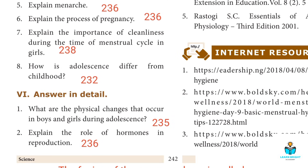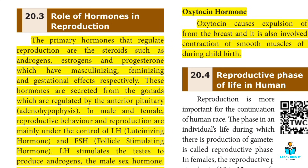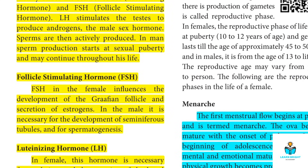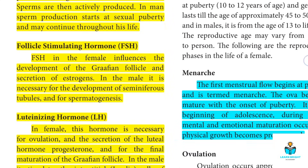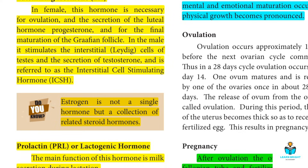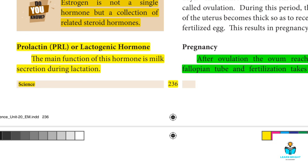Second detail question: Explain the role of hormones in reproduction. The answer is on page number 236. The primary hormones that regulate reproduction include FSH (Follicle Stimulating Hormone), LH hormone paragraph, and PRL — Prolactin or Lactogenic Hormone.